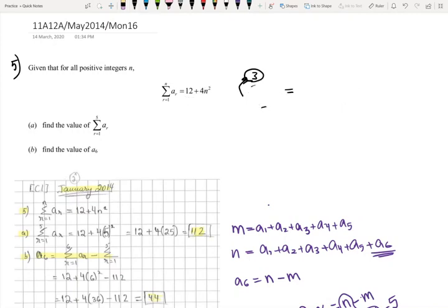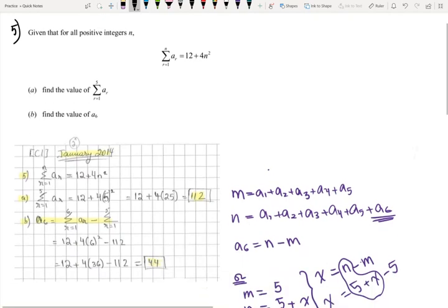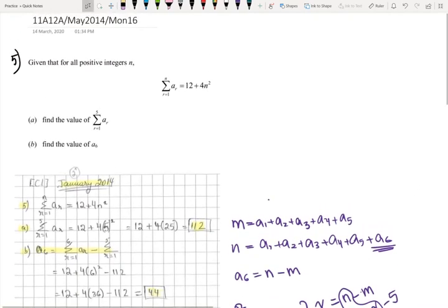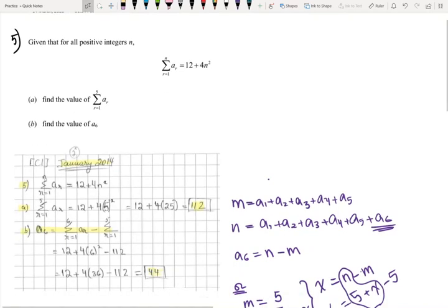Now in part b, find the value of a_6. If we're going to write the summation, or we want to express the summation of a_r from 1 till 5, it's going to be a_1 plus a_2 plus a_3 plus a_4 plus a_5. So we express it as the summation of r equals 1 till 5.